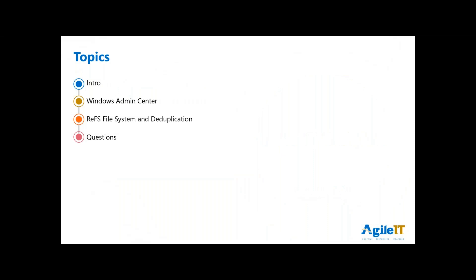We're going to talk around two specific areas. When we talk about Hyper-V, that's going to be the context, but it actually applies to a lot of things within the Windows Server 2019 environment. As always, if you have any questions, please post them so we can follow up towards the end, or we'll open the phone lines if you join us online. This is one of the benefits we have with our customers for both managed services, security as a service, as well as those that do their licensing through us at Agile IT.